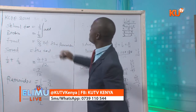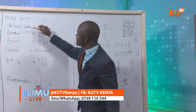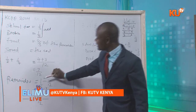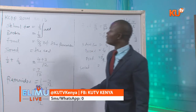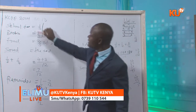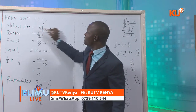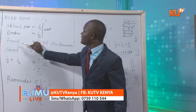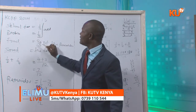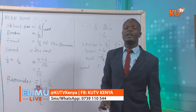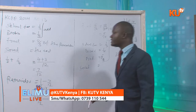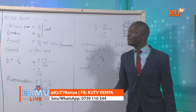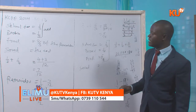So basically, to find the remainder, we add what we have been given, then subtract from a whole in order to get the remainder.